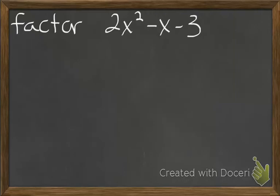Okay, so two different ways to factor a polynomial. In this case, the polynomial 2x squared minus x minus 3.